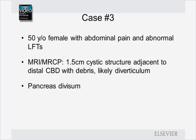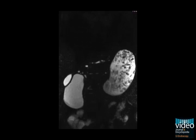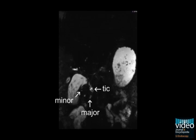Case number three: a 50-year-old female with abdominal pain and abnormal LFTs. An MRI demonstrated a 1.5-centimeter cystic structure adjacent to the distal CBD with debris, likely a diverticulum. Pancreas divisum was incidentally noted. Here we follow the PD from the body into the minor papilla. The bile duct terminates in the major papilla, and we see a duodenal diverticulum.